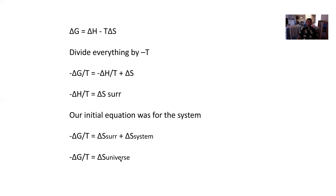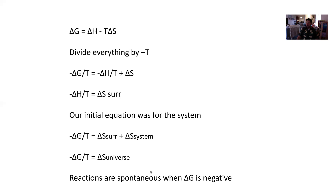We know that if the change in entropy of the universe is positive, the process is spontaneous. To make the left side of this equation positive, we need a negative delta G. We're never going to have a negative temperature — we're always in Kelvins. So if we have a negative delta G, when multiplied by that negative sign, it'll be positive, and a positive delta S of the universe means spontaneous. Reactions are spontaneous or thermodynamically favored when delta G is negative.